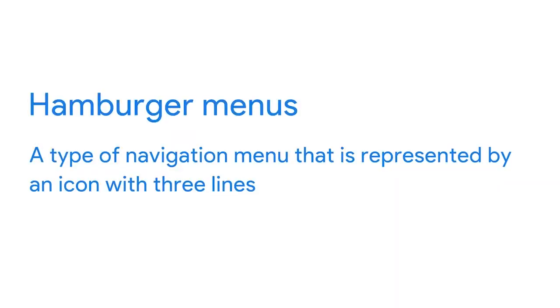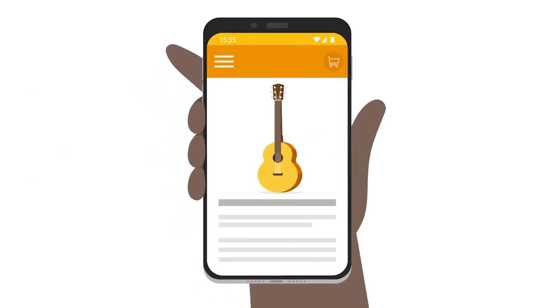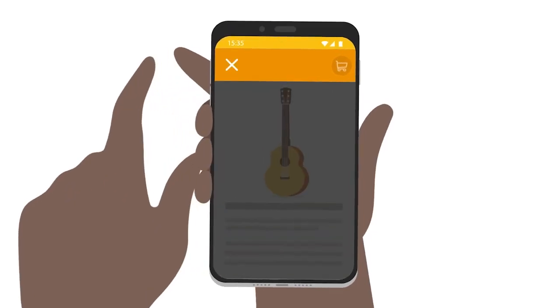First up is a popular navigation design icon you've probably encountered in your favorite mobile websites: a hamburger menu. Hamburger menus are a type of navigation menu represented by an icon with three lines — it kind of looks like a hamburger. When you click on it, it unfolds by either sliding in from the side or taking over the whole page, revealing a menu of options. Hamburger menus are useful to hide information and keep the user's attention focused on the primary content.